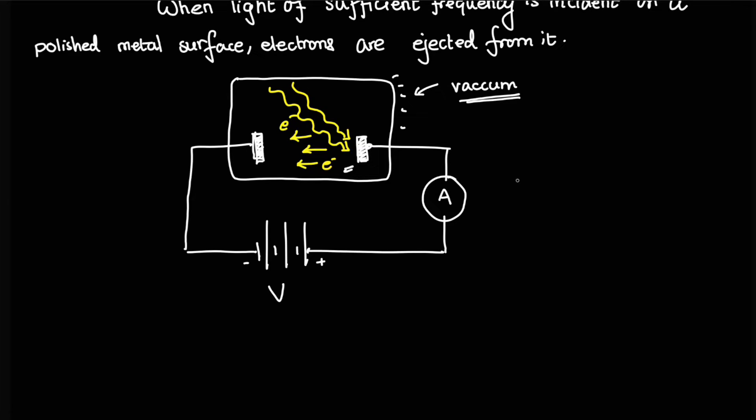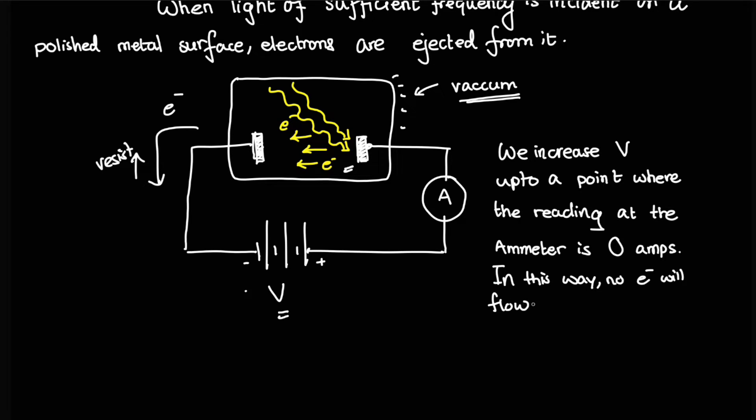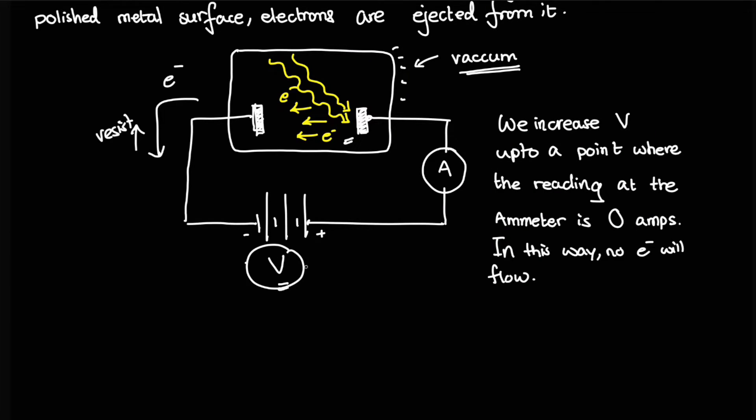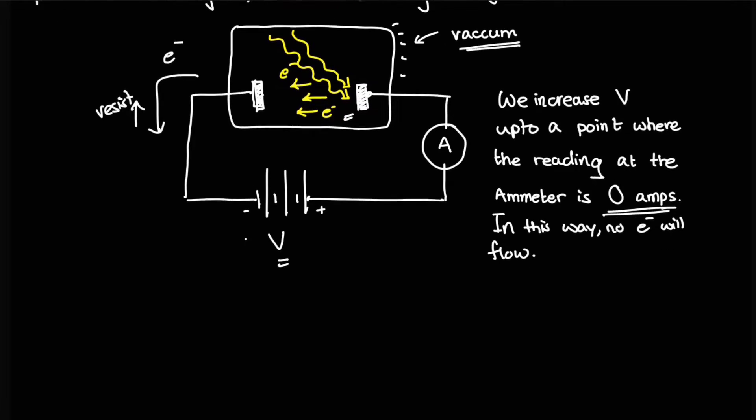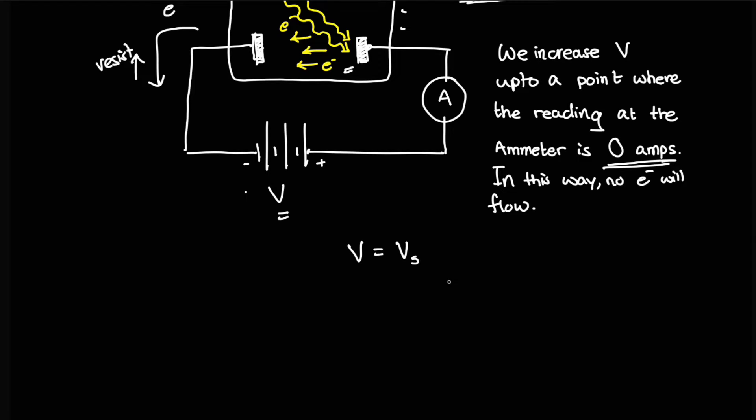What we do is, we keep on increasing the V over here up to a certain stage where the ammeter reads zero amperes, that is, no electrons flow in between these two metal surfaces. This will be achieved because if we allow V to be sufficiently high, this voltage across these two ends will try to resist these electrons from actually coming over here. At that particular value of V where zero amps is recorded, we say that V is V sub S, where this represents the stopping potential.